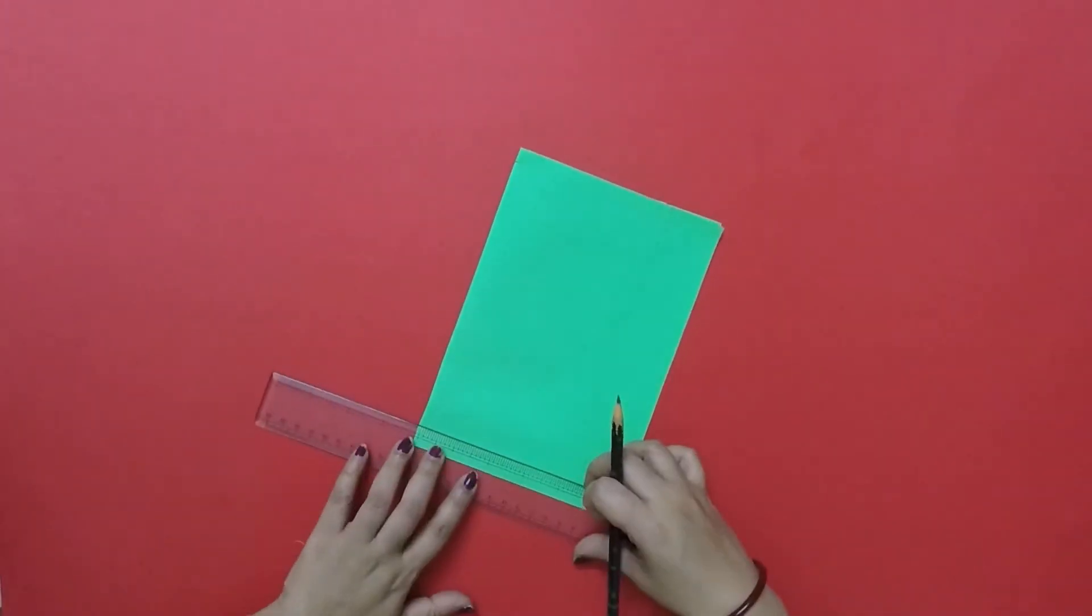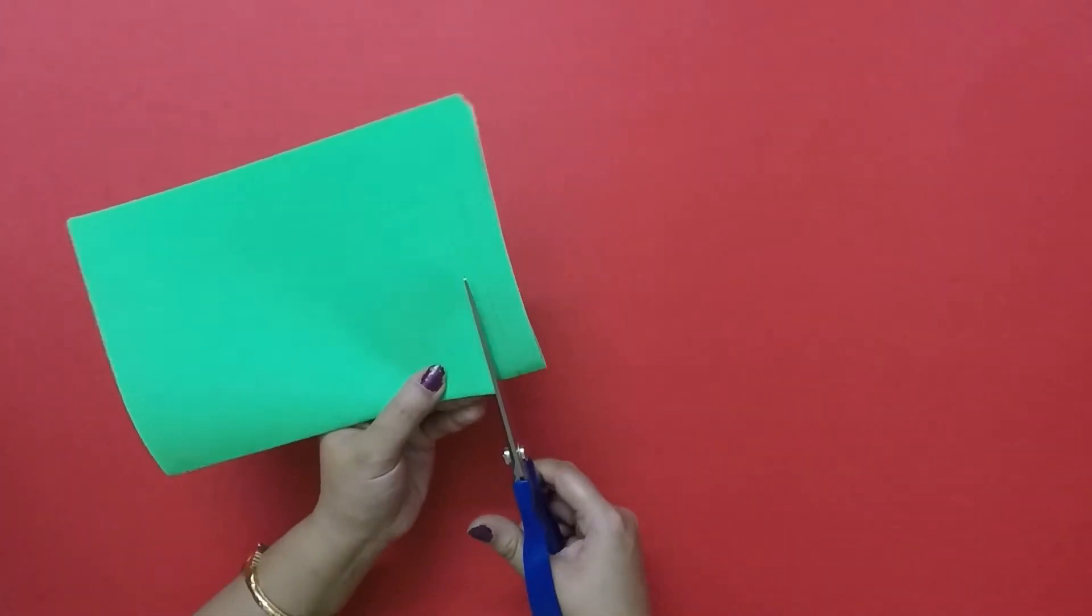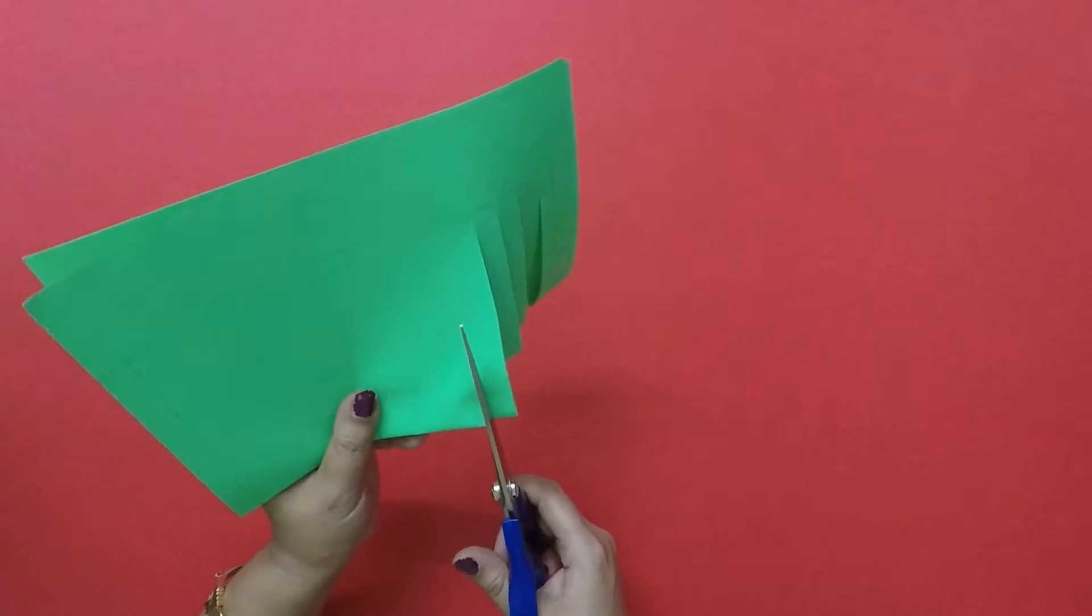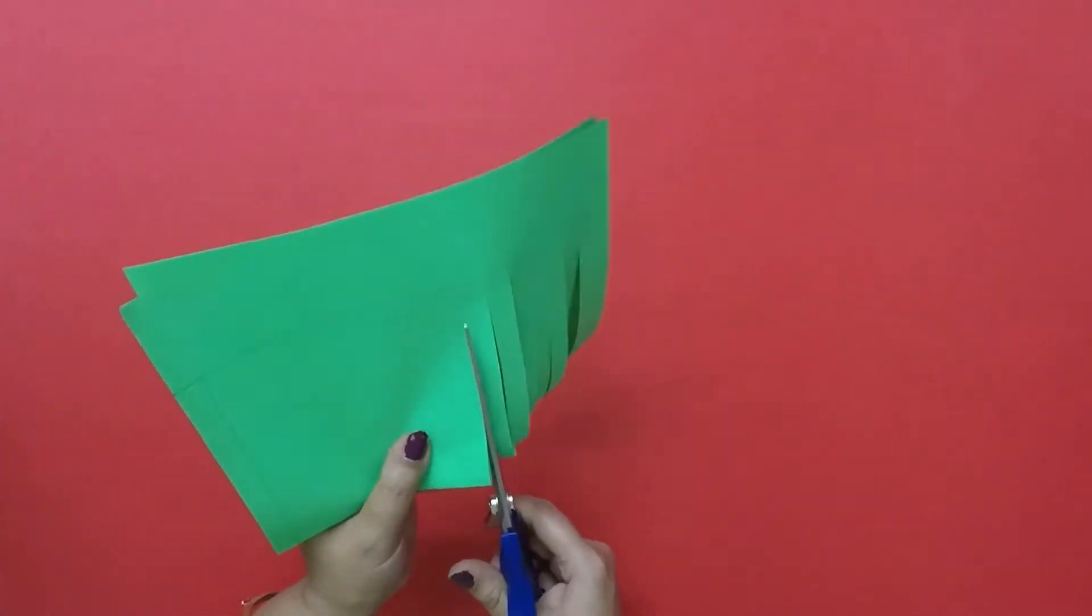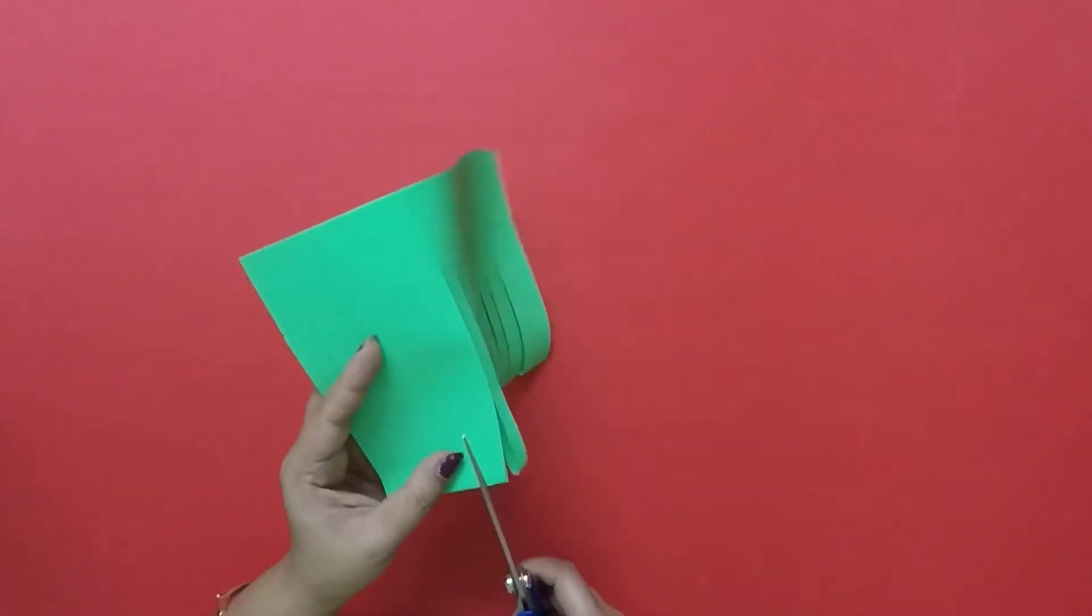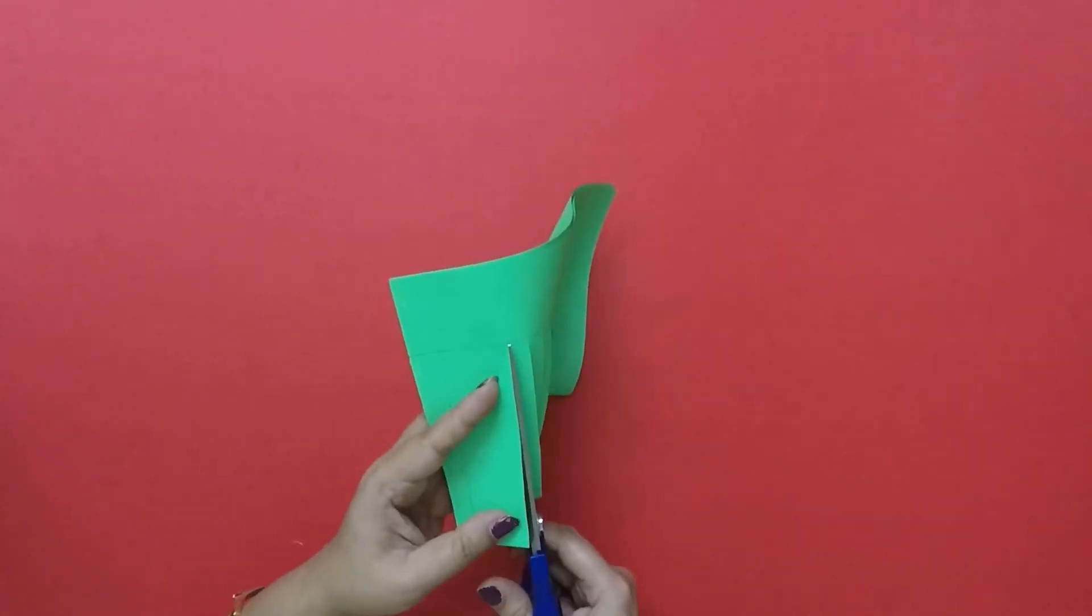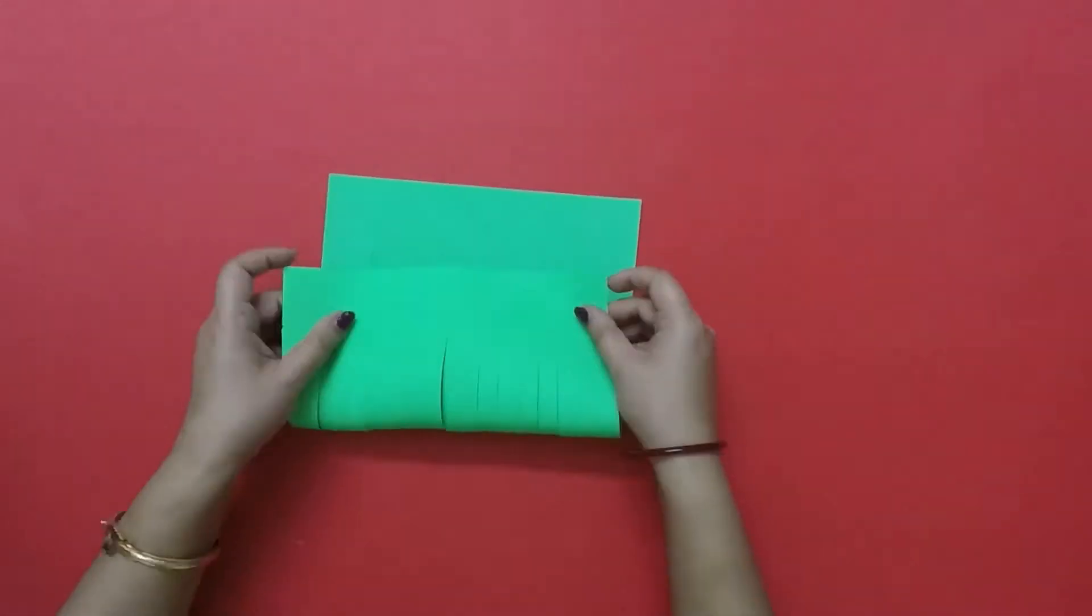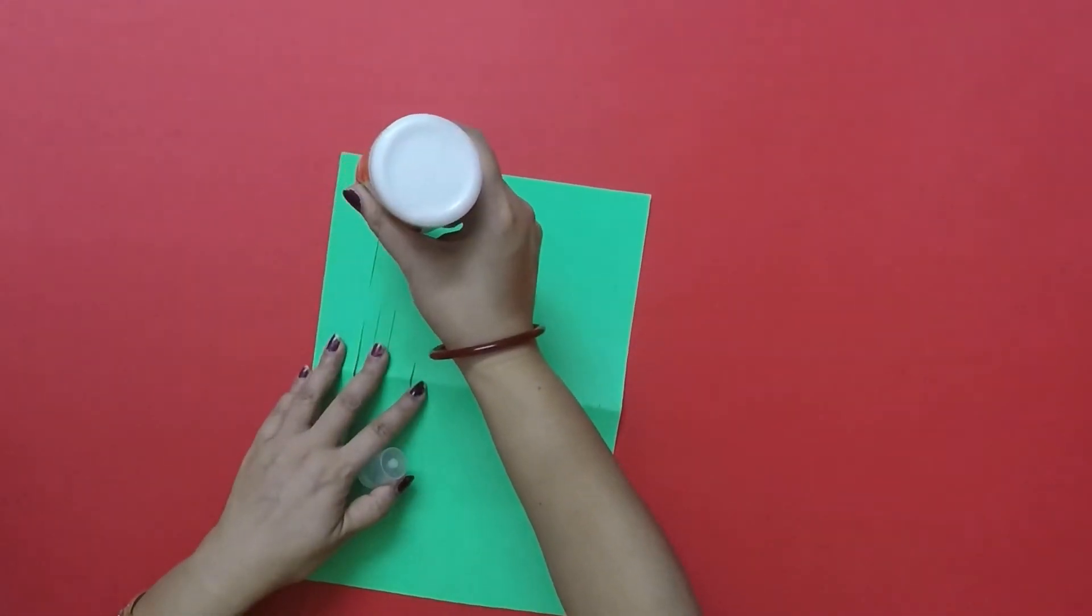5 centimeter away from one edge. Now start cutting parallel lines starting from the folded side till the 5 centimeter line, keeping a gap of approximately 1 centimeter in between. Next fold the paper in the opposite direction and paste